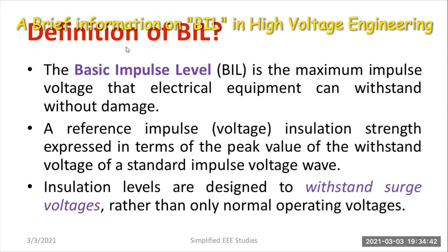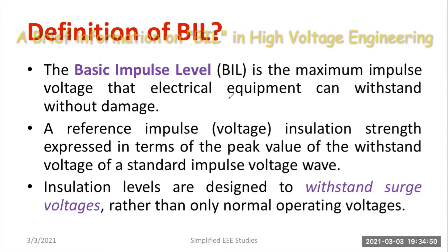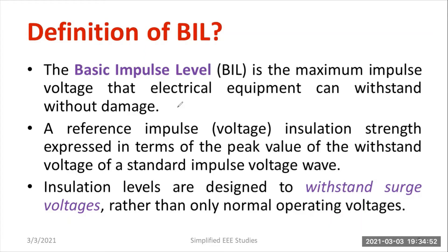Moving on to the definition: the Basic Impulse Level, also known as BIL, is the maximum impulse voltage that electrical equipment can withstand without any damage. It is also defined as a reference impulse voltage insulation strength expressed in terms of the peak value of the withstand voltage of a standard impulse voltage.